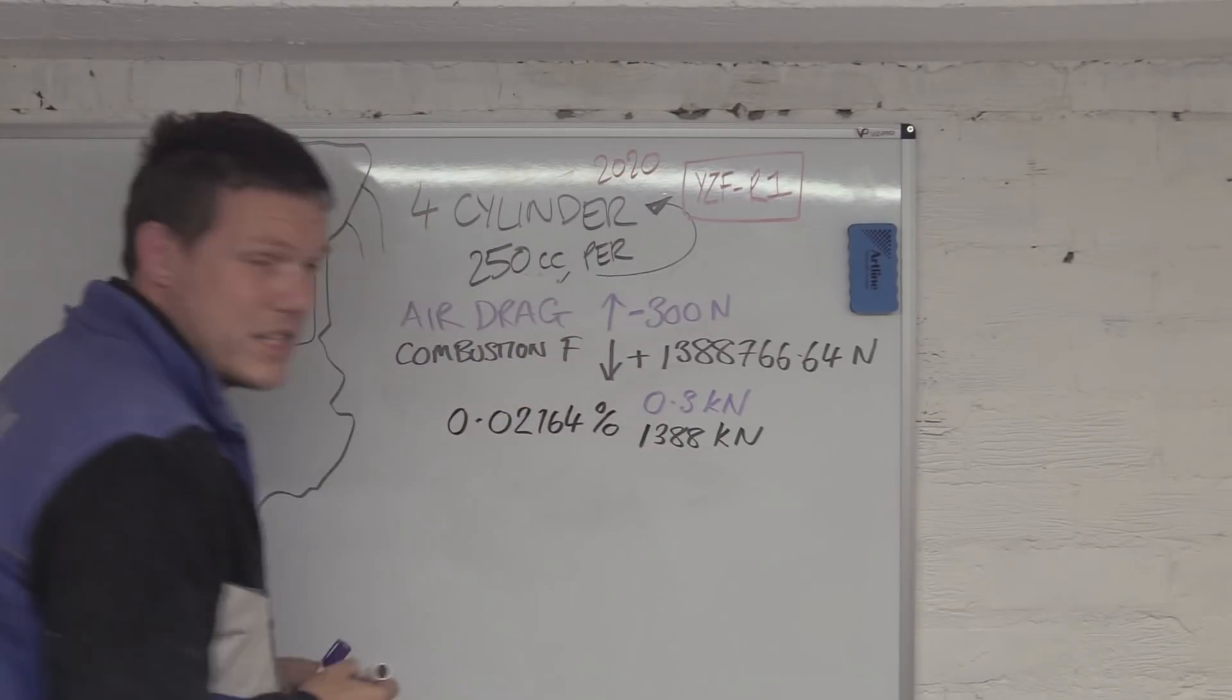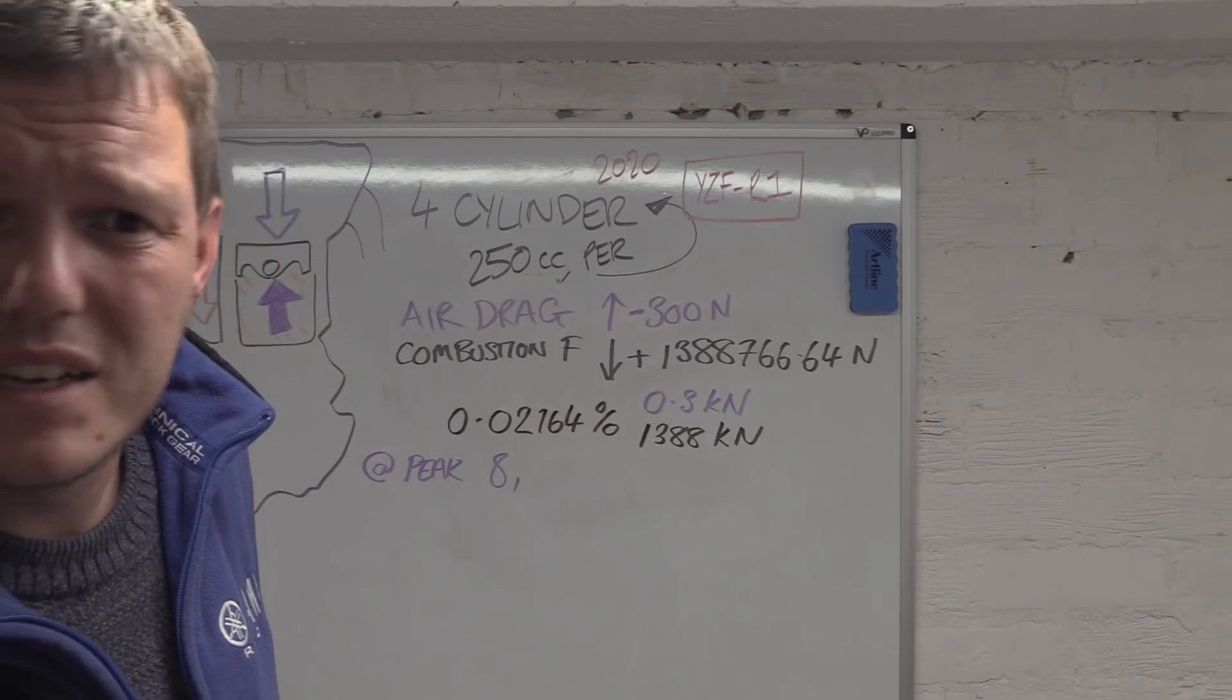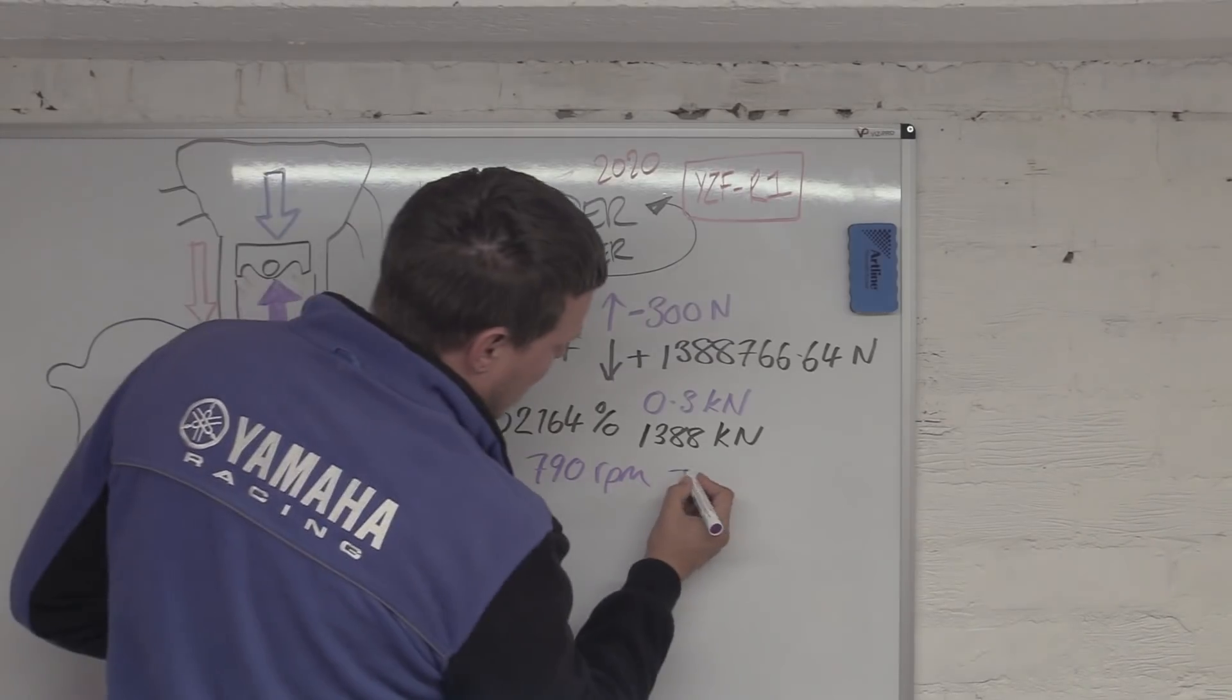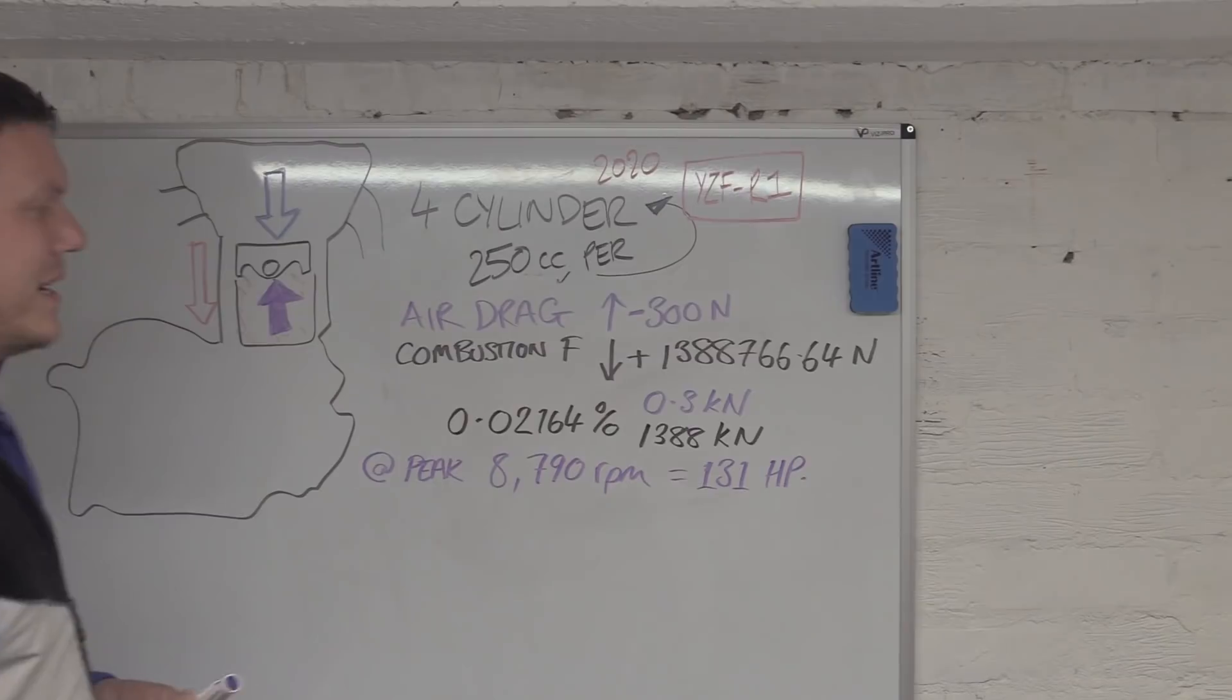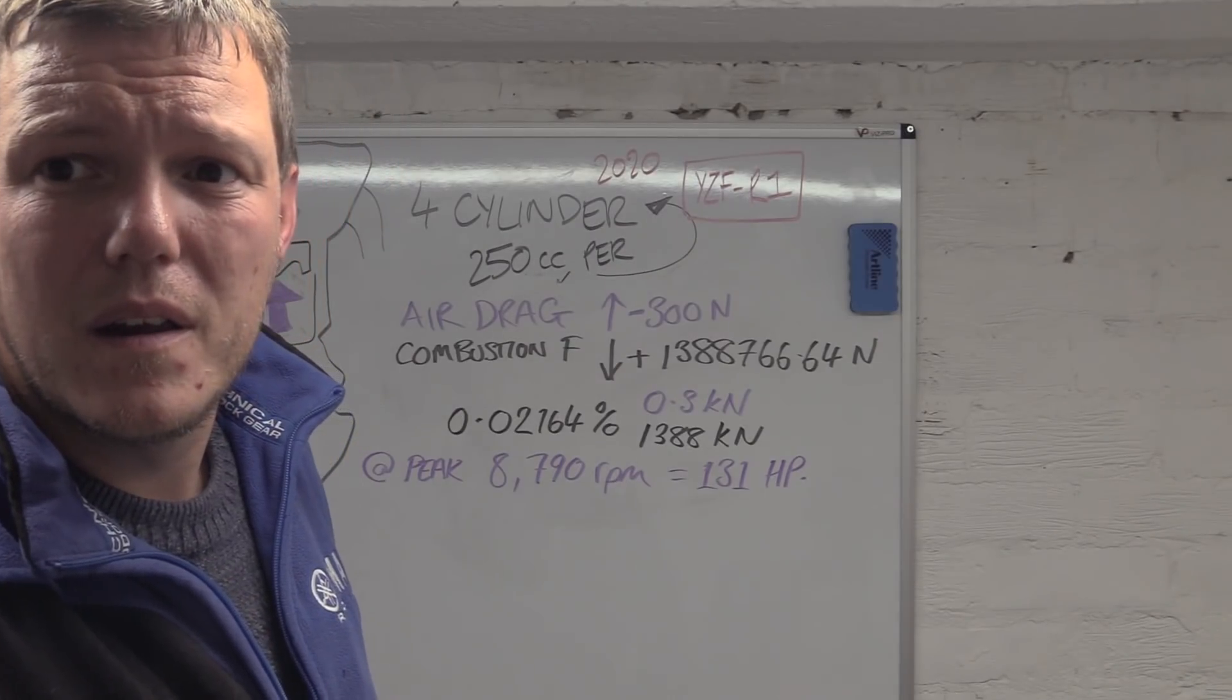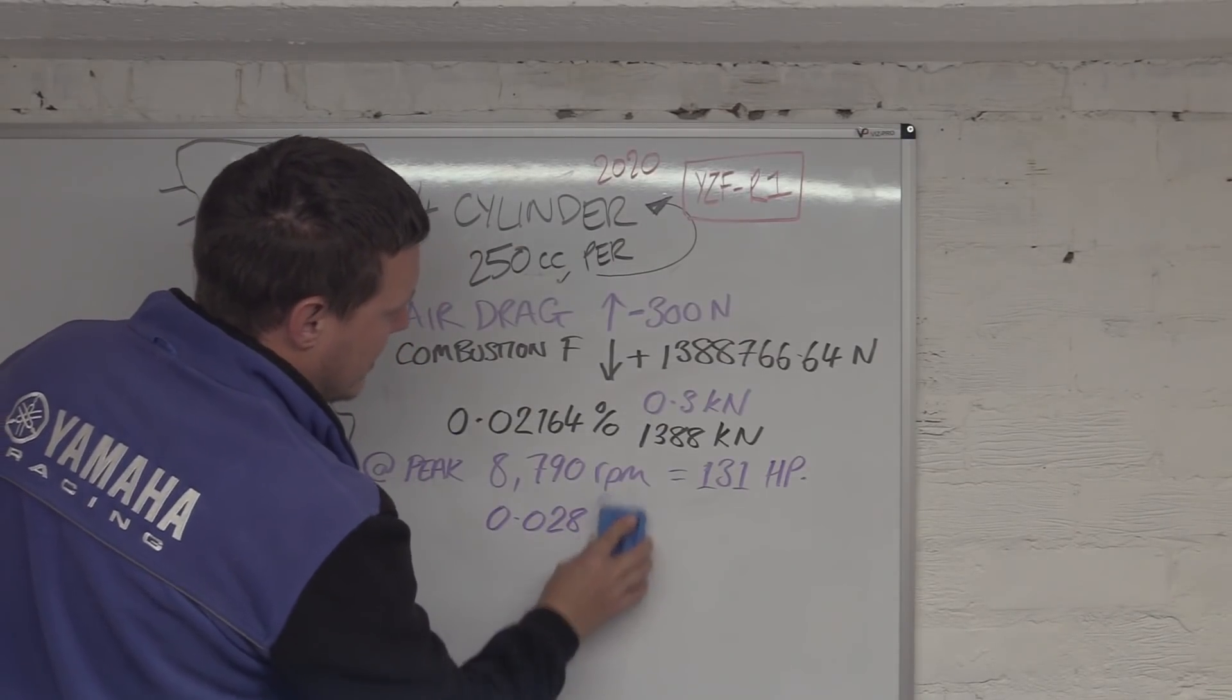Now where does this all matter? This is the drag on the system on the R1 at peak torque, which was 8,790 RPM, because we've got the peak torque and we've got the horsepower. The horsepower here is 131. We work that out from our numbers. The air resistance is 0.02164 percent, and how much is that? It's 0.028 of a horsepower.